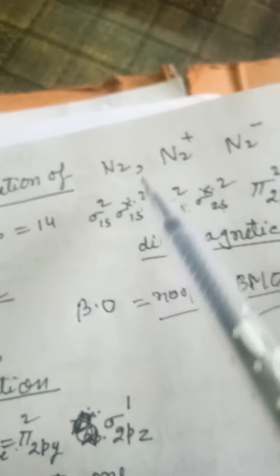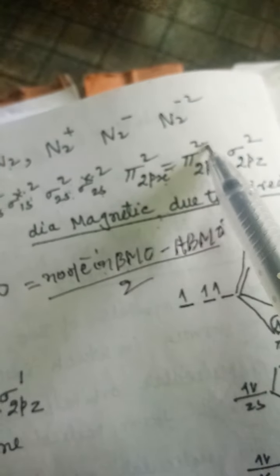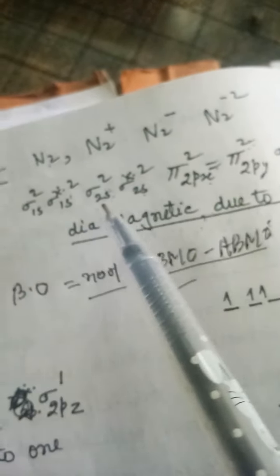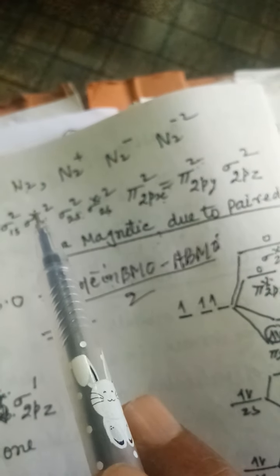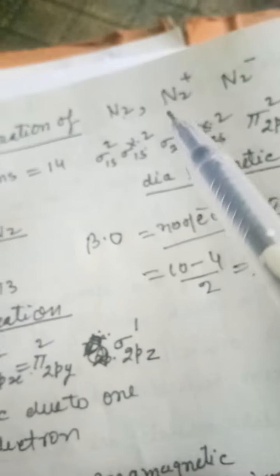The number of electrons in bonding molecular orbitals for nitrogen: 2, 2, 4, 2, 6, 2, 8, 2, 10 — so the number of electrons in bonding molecular orbitals is 10. Minus the number of electrons in anti-bonding molecular orbitals: 2, 2 — that is 4. So 10 minus 4 divided by 2 equals 3. There are 3 bonds in the nitrogen molecule.